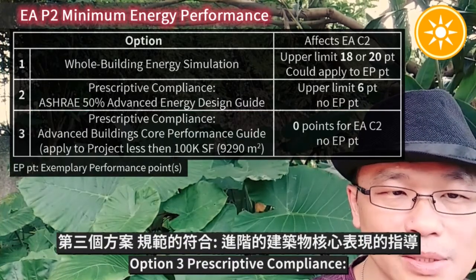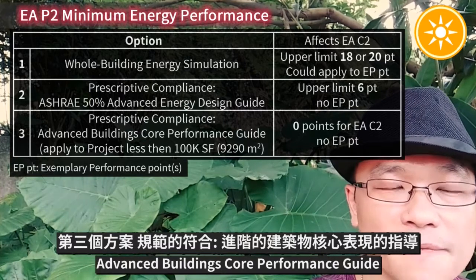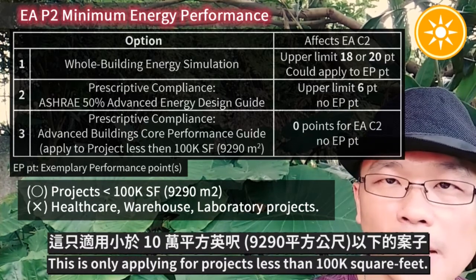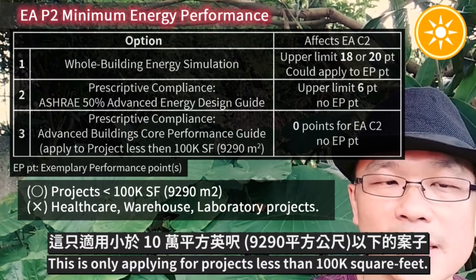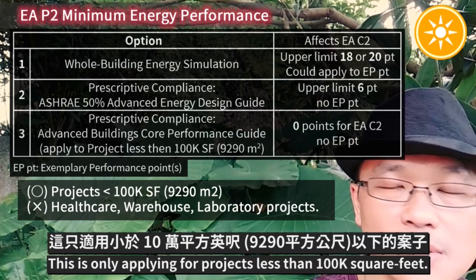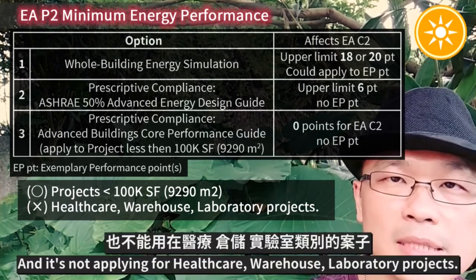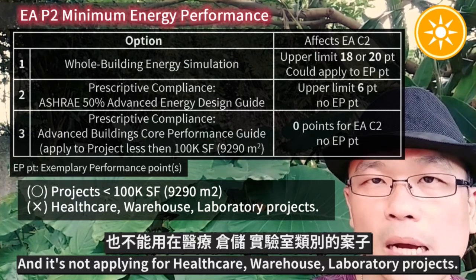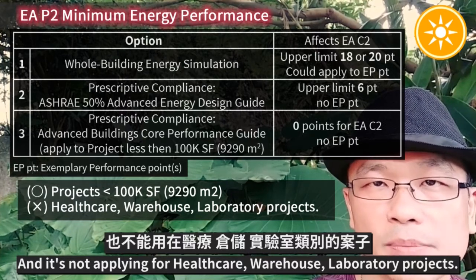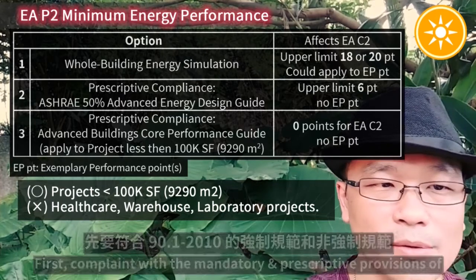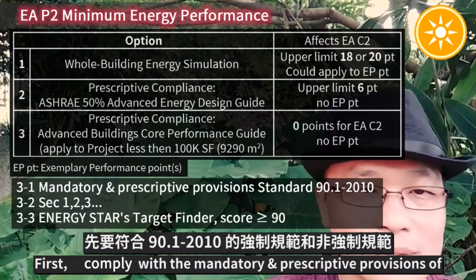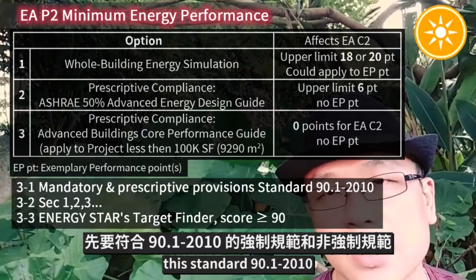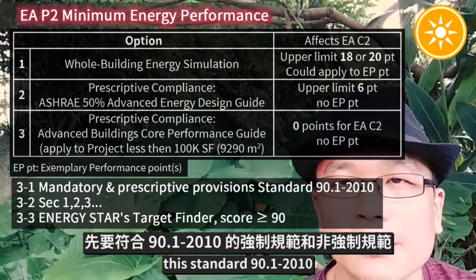Option 3: Prescriptive Compliance, Advanced Buildings Core Performance Guide. This is only applied for projects less than 100,000 square feet, and is not applied for healthcare, warehouse, or laboratory projects. First, comply with the mandatory and prescriptive provisions of Standard 90.1-2010.